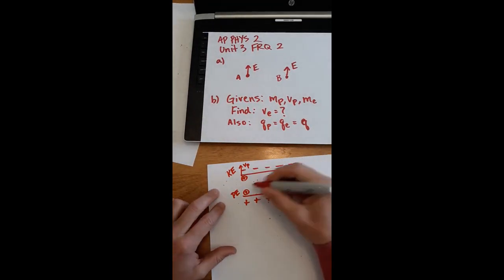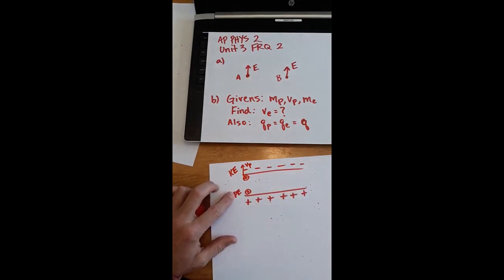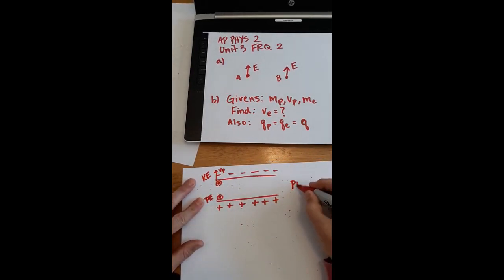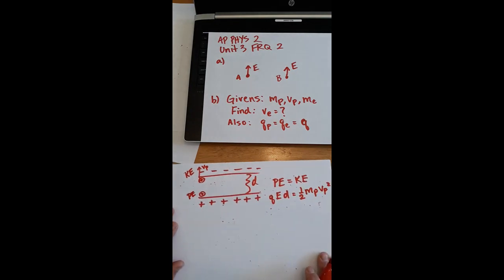Now if I'm looking at my equation, my equation would be that that potential energy converts into that kinetic energy such that the total energy is conserved. This electric potential energy can be expressed as QED. Remember, Q could be the charge of a proton or an electron in this case. E, there's a uniform electric field, and there's some distance separating these two plates D, that would be equal to one-half mass of the proton, velocity of the proton squared. There we go.